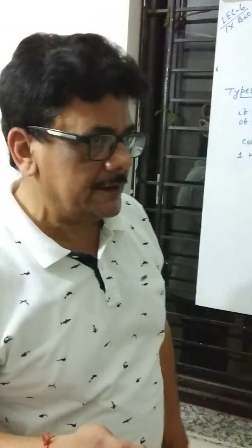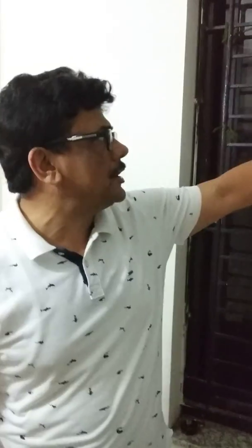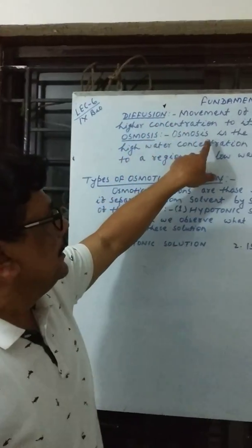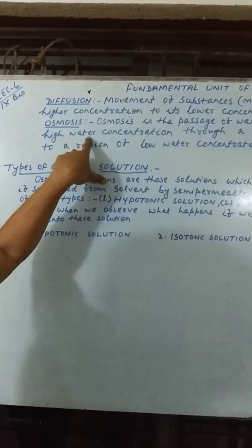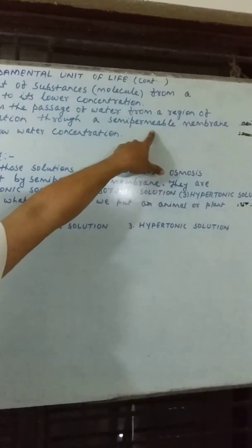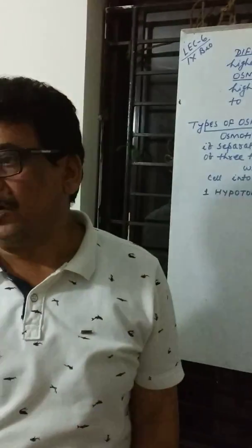This is due to diffusion. Where the incense stick is burning, there is a high concentration, and inside the room there is a low concentration. The movement of molecules takes place from high concentration to low concentration. But when we talk about osmosis, it is a special type of diffusion — the passage of water molecules from a region of high water concentration through a semi-permeable or living membrane to a region of low water concentration. This is called osmosis.